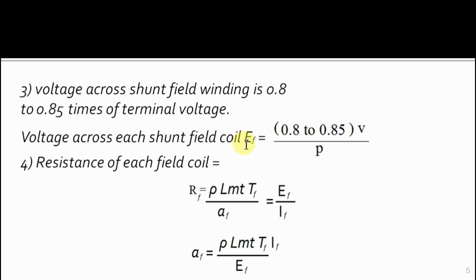ef is 0.8 to 0.85 times of terminal voltage divided by number of poles p. Resistance of each field coil has two equations. Equating those, we get the value of af, which is the area of cross-section of field winding.